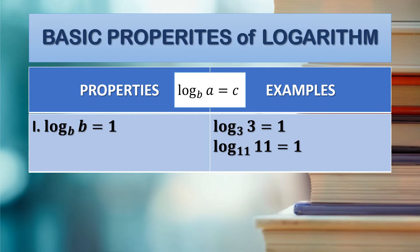So it means a is equal to b, or the value of a is the same as the value of the base, so its equivalent exponent is 1. For example, the log of 3 with base 3 is equal to 1. In exponential form, this is 3 raised to 1 equals 3. Next example: the log of 11 with base 11 is equal to 1, so 11 raised to 1 equals 11.